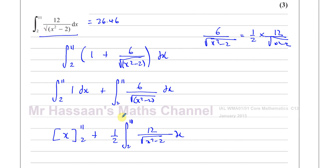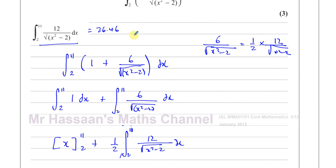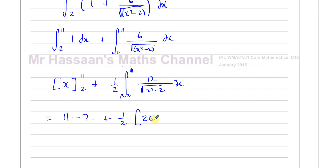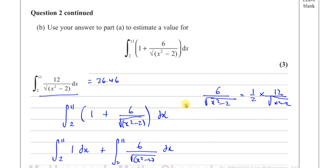Now I can replace that integral with the value from part A, which is 26.46. So the whole expression becomes 9 plus one half times 26.46. Half of 26.46 is 13.23, so the answer is 9 plus 13.23, which equals 22.23. That is the estimate for the value of this integral.